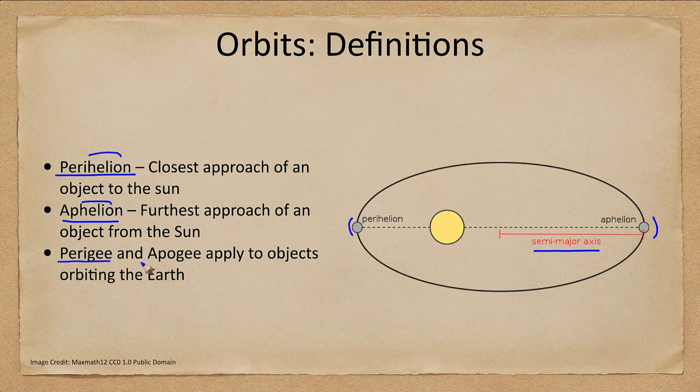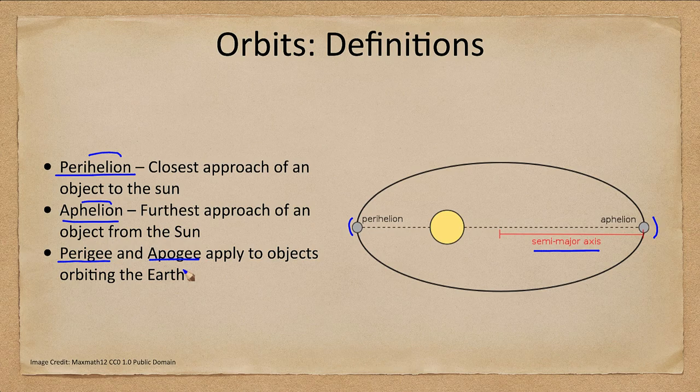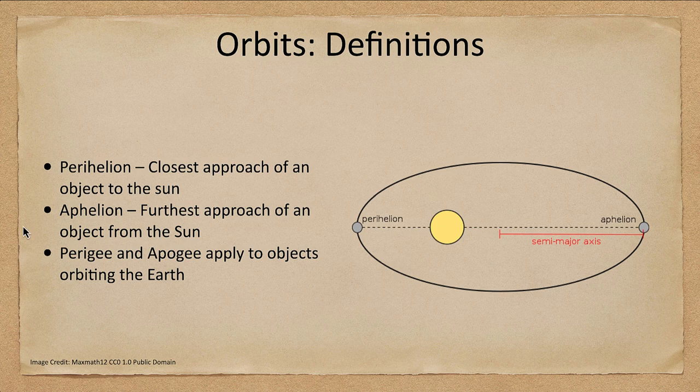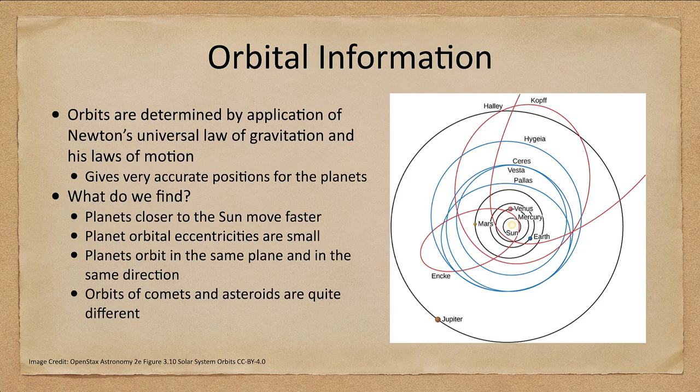We can also talk about perigee and apogee if we're talking about things orbiting the Earth, such as our moon or satellites.